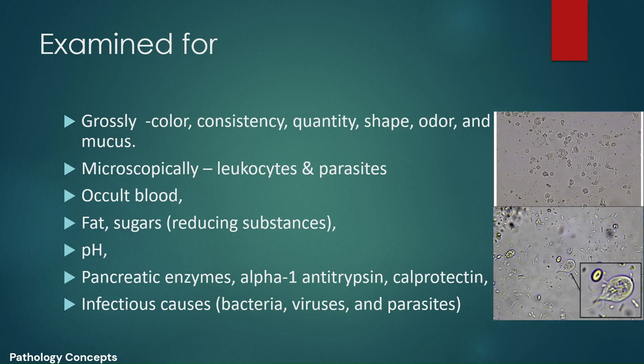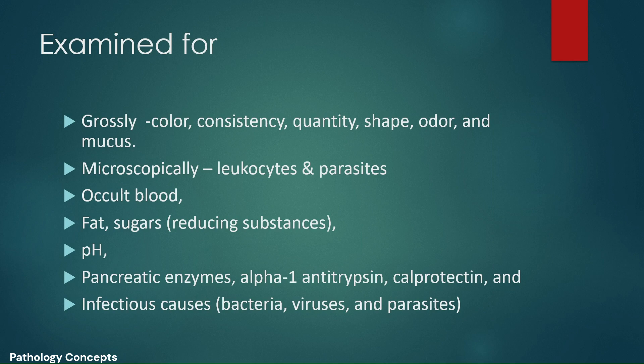Microscopic examination is done to identify leukocytes and parasites. Other examinations include occult blood test, test for fat and sugar, identification of stool pH, and other biochemical examinations like testing for pancreatic enzyme, alpha-1 antitrypsin, and calprotectin. To find infectious causes of diarrhea or dysentery, stool is examined for bacteria, virus, and parasites.